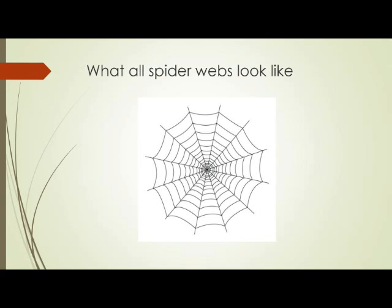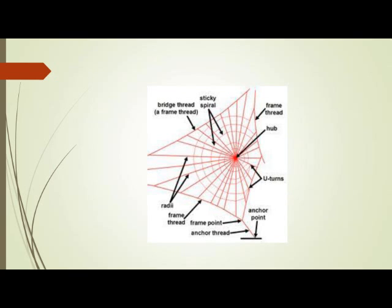Since the orb web is the type we are most familiar with, it's the best example to show the different parts of a web. The main parts are: the hub, which is the center of the web where the spider usually sits; the frame threads, which border the web; the sticky spiral or insect-catching area; and the anchor points, which are the points of attachment of the web to the substrate.